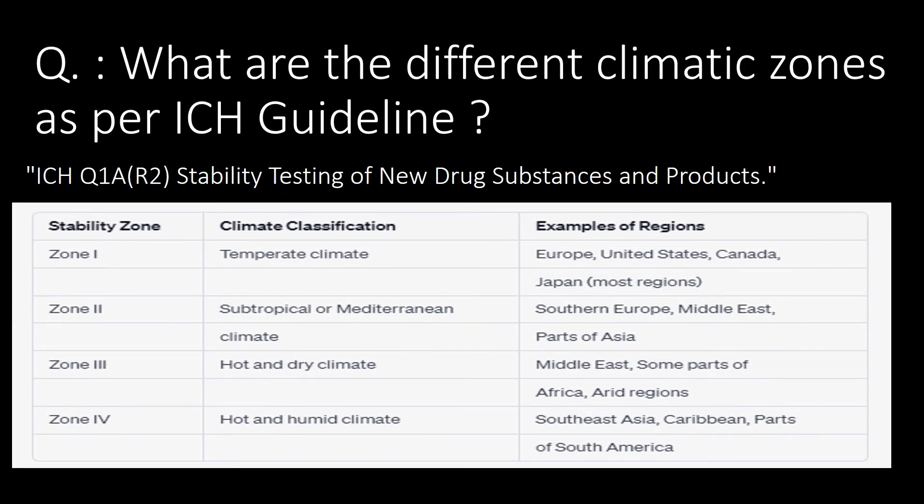What are the different climatic zones as per ICH guidelines? As per ICH Q1AR2 stability testing of new drug substances and products, there are four climatic zones. You can refer to the table below for different stability zones, their climatic classification, and example regions that fall under each specific stability zone.